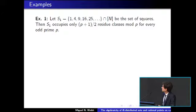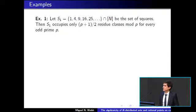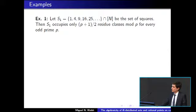The most basic example of a set that is badly distributed in residual classes is the set of squares: 1, 4, 9, 16, and so on. It is very well known that this set occupies only (p+1)/2 residual classes mod p for every odd prime p. So the squares occupy only half of the residual classes for every odd prime p. This is very strange behavior, but the squares do this. Whatever algebraic structure means, the squares are certainly a very algebraic set. This is a particular case of a general phenomenon: the image of a polynomial tends to behave in a weird way in the distribution of residual classes.